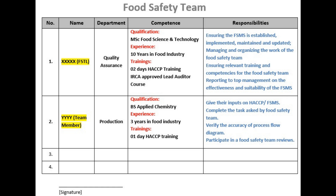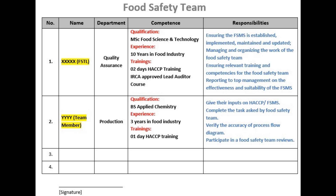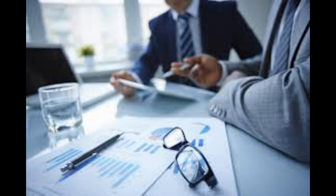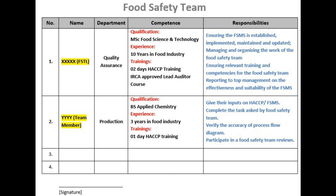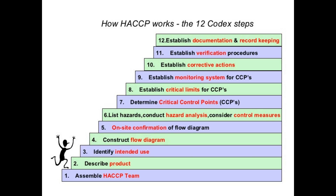The food safety team leader is responsible for managing and organizing the work of the food safety team, ensuring relevant trainings and competencies for the team, and reporting to top management on the effectiveness and suitability of the food safety management system. Once this document is completed with the help of top management, the team will be responsible for completing the remaining 11 steps.